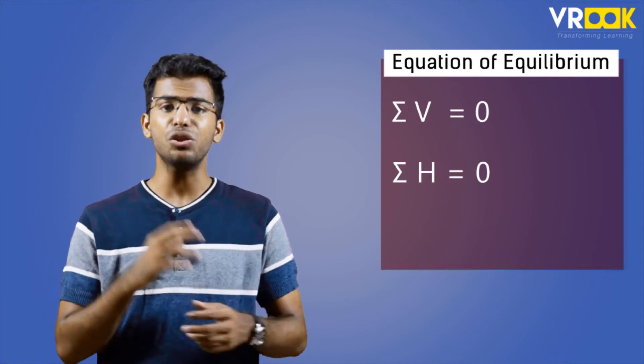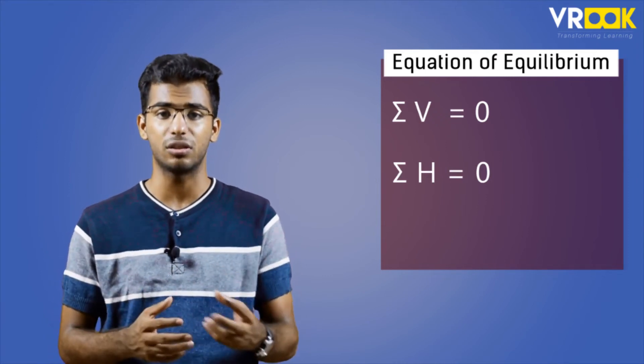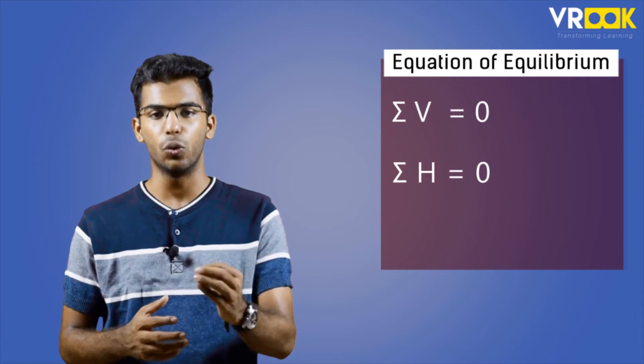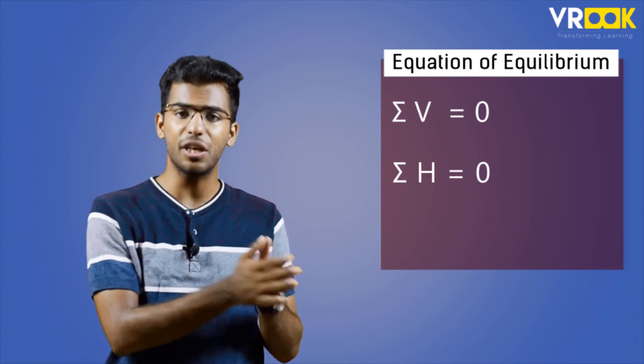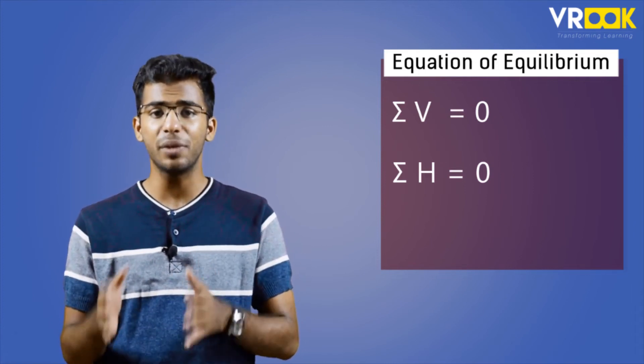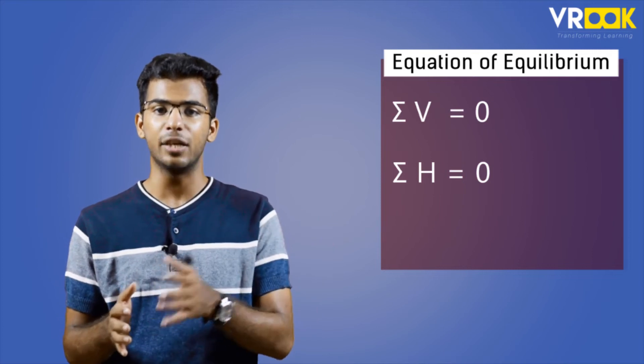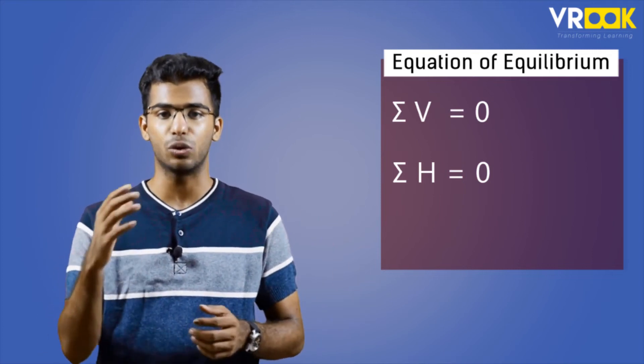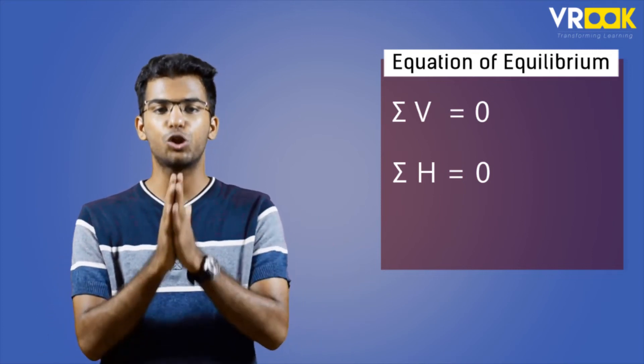Secondly, the summation of horizontal forces in the system should be zero. That is, sigma H equals zero, which means forces acting to the right and forces acting to the left of an object should be equal.